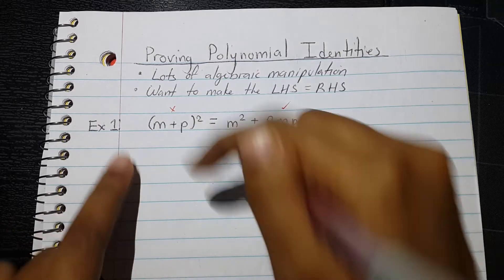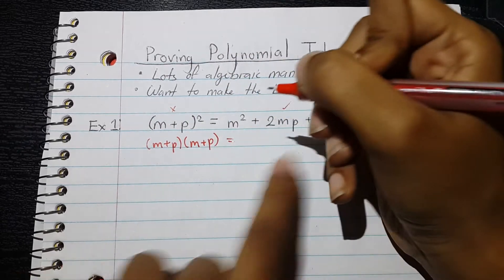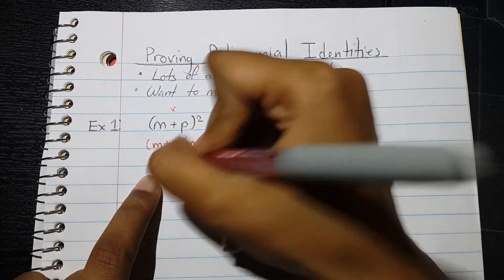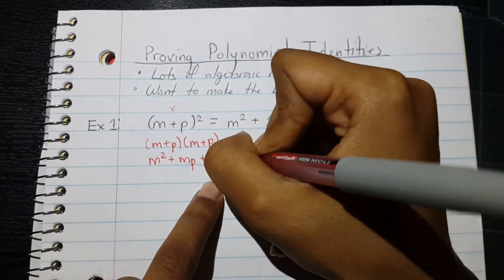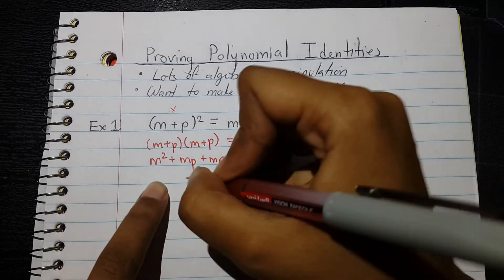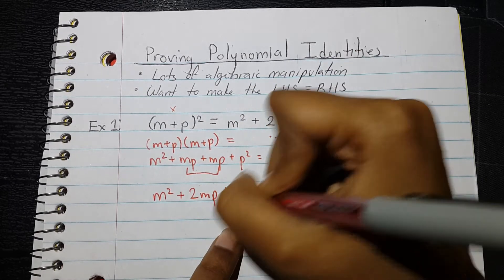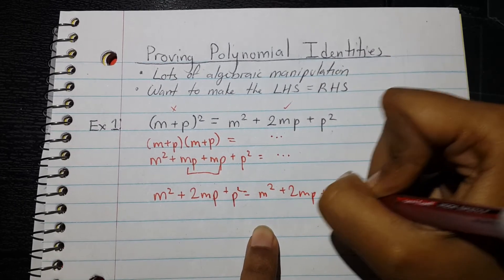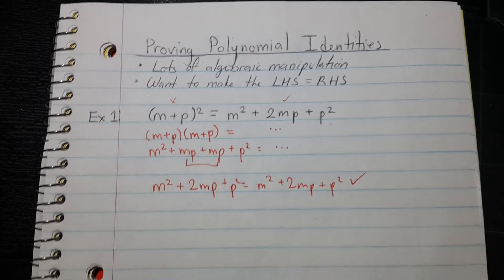First, I want to expand this, so it's written as (m + p)(m + p). Then I distribute: m times m is m², plus m times p is mp, plus p times m — I'll rewrite that as mp — plus p times p is p². Now I combine like terms to get m² + 2mp + p², and that equals m² + 2mp + p². They're both equal to each other, so that proves it.